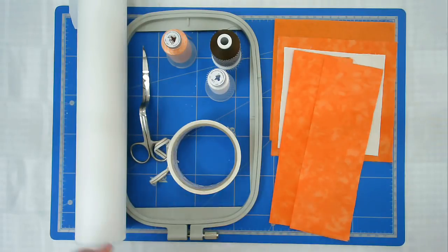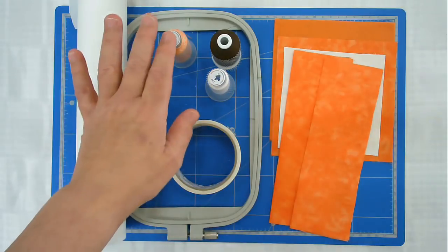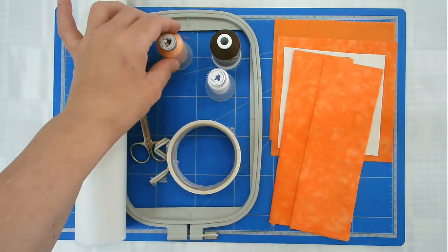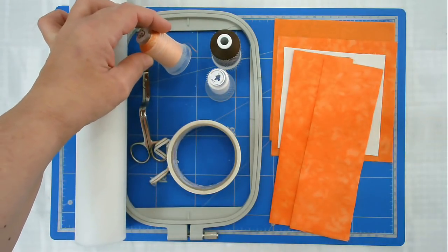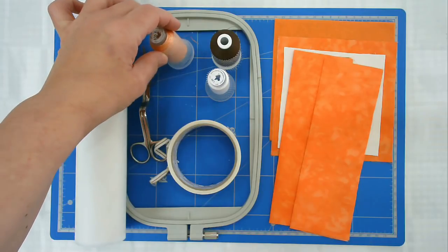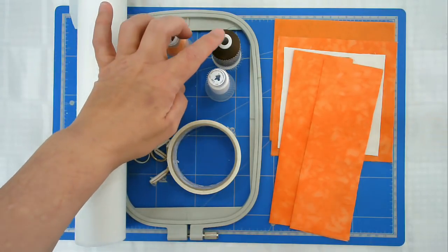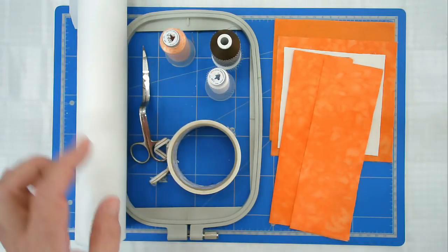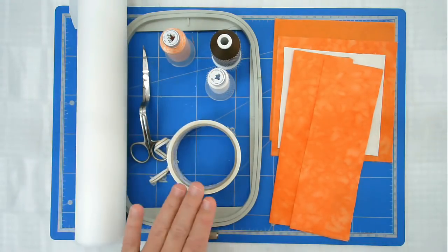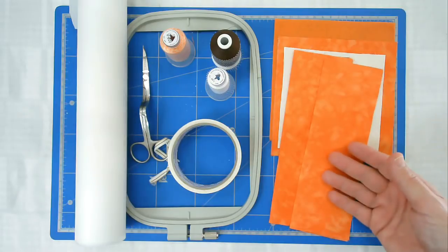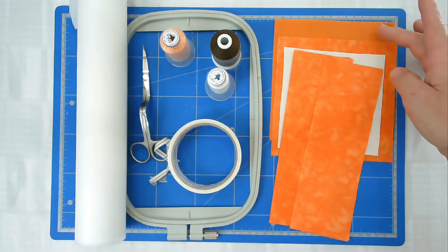For this bunny mug rug I'm going to be using cutaway stabilizer, my 5x7 hoop, threads including a variegated for all the decorative edge stitching with a matching bobbin, brown and white for the facial features, my curved scissors, masking tape, and my fabrics cut to size. I'm using felt today rather than batting.